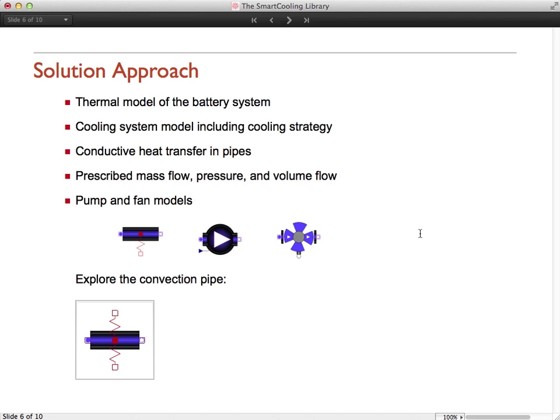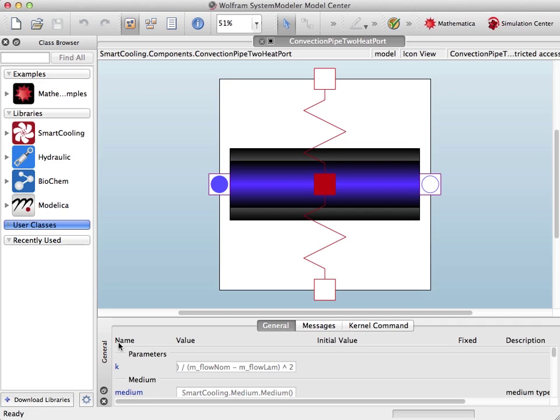As an example, let's take a look at the convection pipe in System Modeler. It has two flow ports here on the left and the right, which contain variables for the pressure, enthalpy, enthalpy flow, mass and mass flow of the medium in the pipe. The pipe also has heat flow connectors, where you can connect heat directly to the pipe's medium or the wall of the pipe.